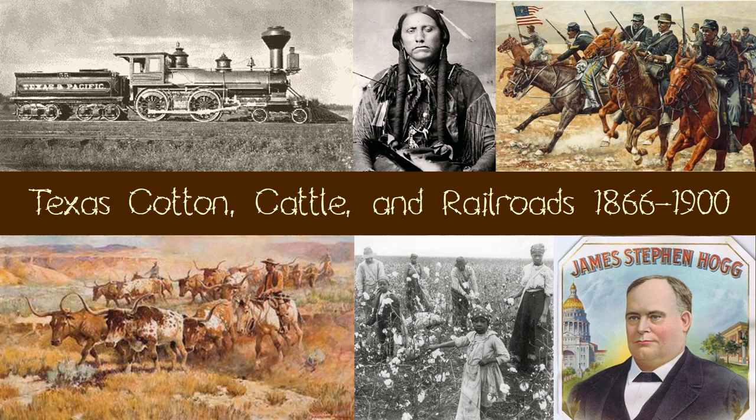Looking at the pictures on this slide: we have the Texas and Pacific Railroad; Quanah Parker, the last Comanche chief; the Buffalo Soldiers, who were Black soldiers in the federal army following the Civil War — most of these were free Blacks. At the bottom we have a cattle drive picture on the left. In the middle we have sharecroppers — the institution of slavery may be over, but the Black community still had a long way to go in terms of fair treatment. And in the bottom right corner is Governor James Hogg, who played a key role in shaping the Texas economy through railroad regulation.